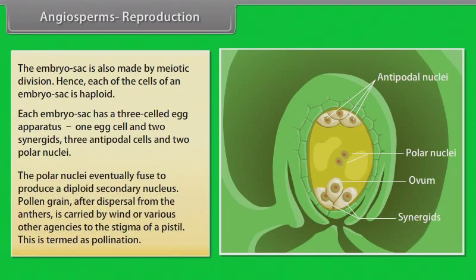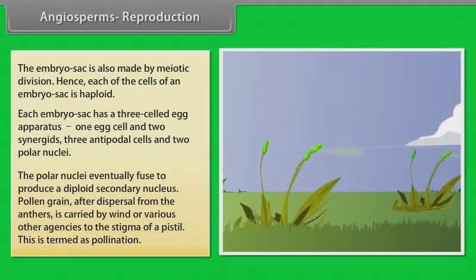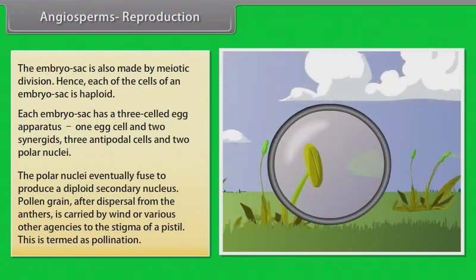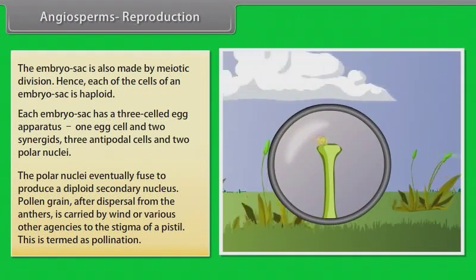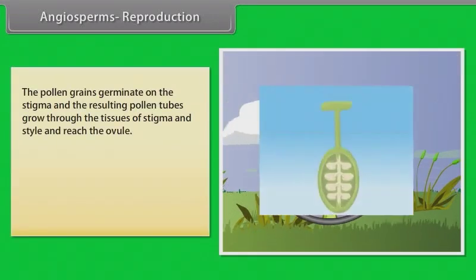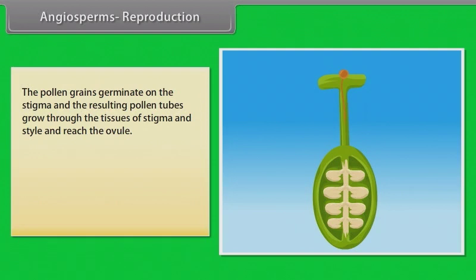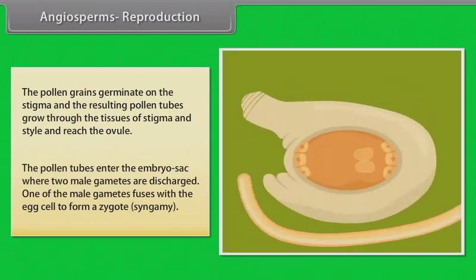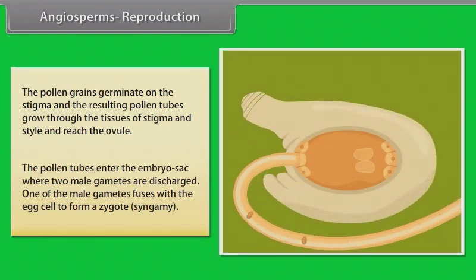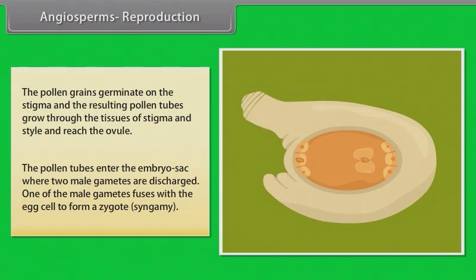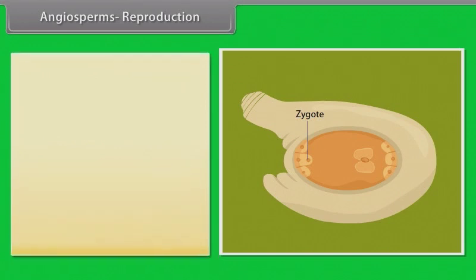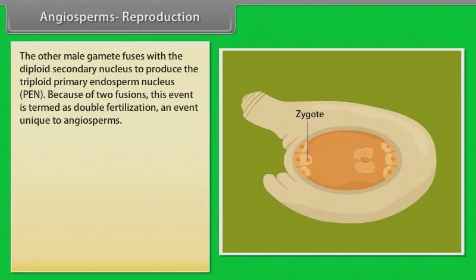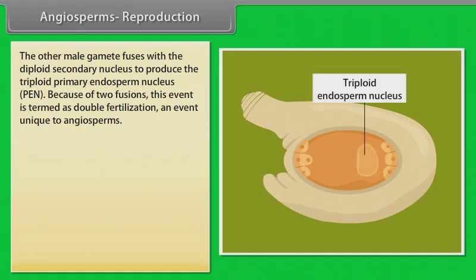The polar nuclei eventually fuse to produce a diploid secondary nucleus. Pollen grain after dispersal from the anthers is carried by wind or various other agencies to the stigma of a pistil. This is termed as pollination. The pollen grains germinate on the stigma and the resulting pollen tubes grow through the tissues of stigma and style and reach the ovule. The pollen tubes enter the embryo sac where two male gametes are discharged. One of the male gametes fuses with the egg cell to form a zygote, syngamy. The other male gamete fuses with the diploid secondary nucleus to produce the triploid primary endosperm nucleus PEN.